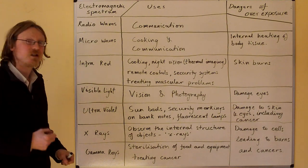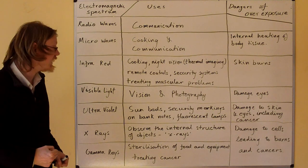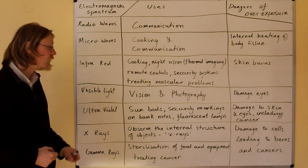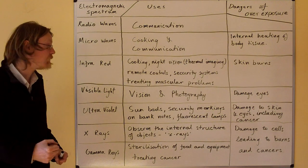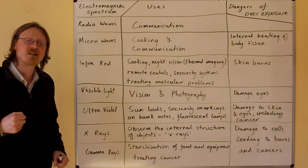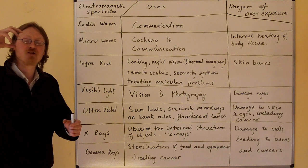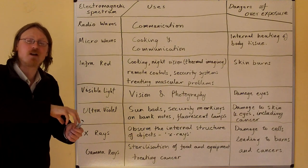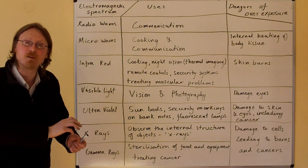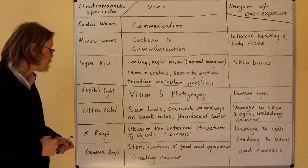Visible light is used in vision — we use visible light to see — and also in photography. Ultraviolet is used in sunbeds, security markings on banknotes and fluorescent lamps. A UV lamp is shone on a banknote and that shows up a special marking that can only be seen under ultraviolet light.